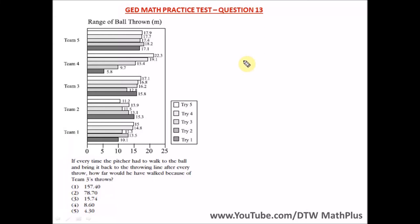Question 13 of the GED math practice test part one, that's the part with calculator. We're still on this particular chart here. It says if every time the pitcher had to walk to the ball and bring it back to the throwing line after every throw.